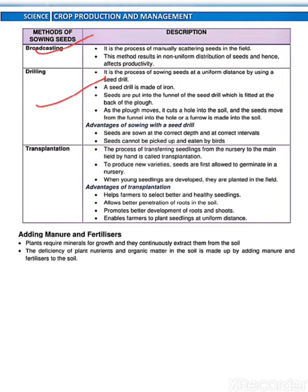What are the advantages of sowing with a seed drill? Seeds are sown at the correct depth and at correct intervals. Seeds cannot be picked up and eaten by birds. Transplantation — the process of transferring seedlings from the nursery to the main field by hand is called transplantation. Advantages: it helps the farmer select better and healthy seedlings, allows better penetration of roots in the soil, promotes better development of roots and shoots, and enables farmers to plant seedlings at uniform distance.